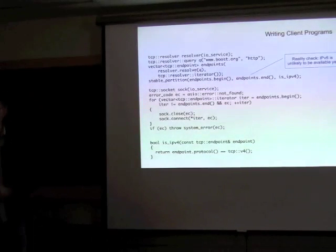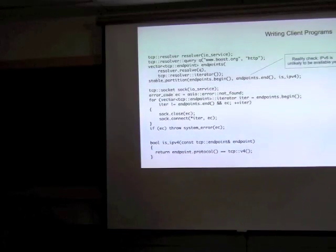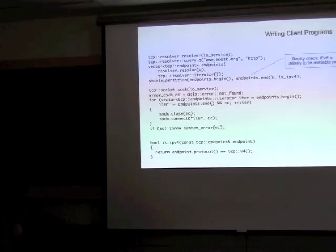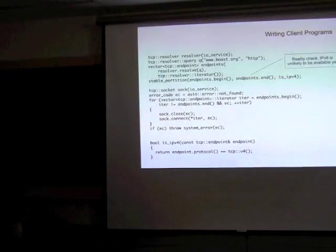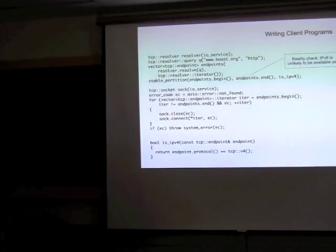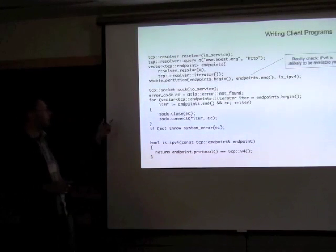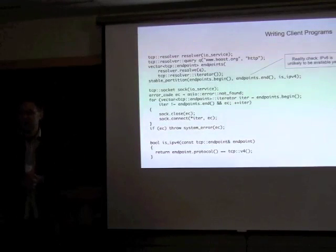Coming back to the earlier question: even though we've run out of IPv4 addresses, for the foreseeable future we're still going to be primarily using IPv4. If IPv6 addresses are first and you always try them first, you'll be making connection attempts that always fail, making your connections take longer. You could do something like copy the list of endpoints into a vector and use a stable_partition to put the IPv4 addresses first. It's deliberately stable because the DNS resolution may have returned addresses in a particular order because some are preferred for a particular host name.